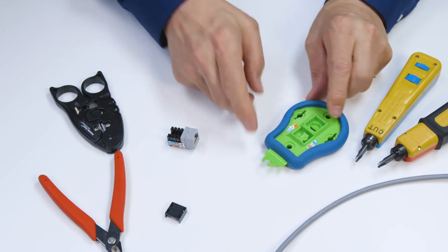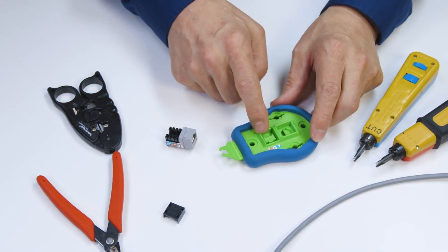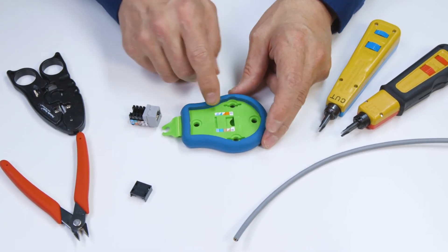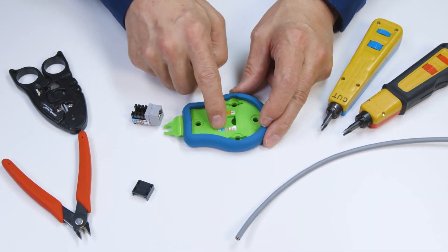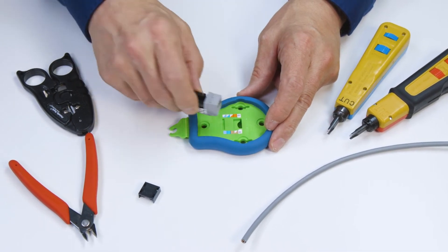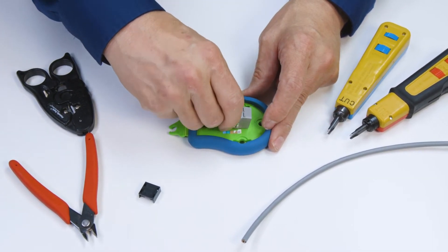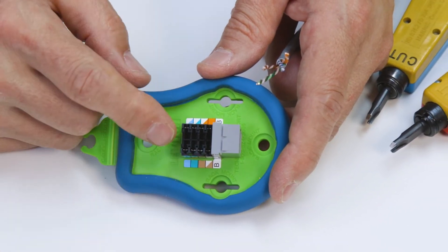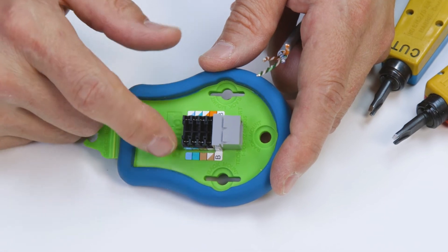For fast, simple termination, use a Leviton palm tool when terminating the Gigamax jack. The palm tool is shipped with B wiring labels installed, but it can be modified with the A labels that are included. Remove the dust cap and insert the jack into the palm tool between the wiring labels. The wiring label on the palm tool provides better visibility for termination.